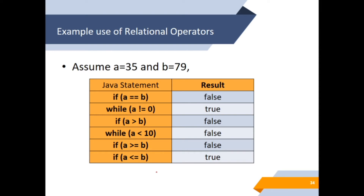Example use of relational operators: assume a equals 35 and b equals 79. Java statement: if a == b, that is 35 == 79 — is it true? No, so the result is False. While a != 0: 35 != 0 is True. If a > b: 35 > 79 is False. While a < 10: 35 < 10 is False. While a >= 79: 35 >= 79 is False. If a <= 79: 35 <= 79, this is True.